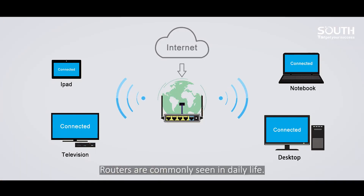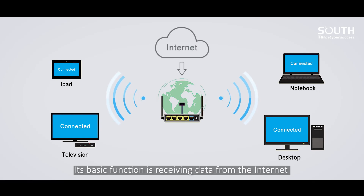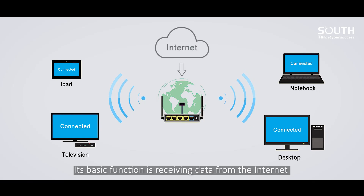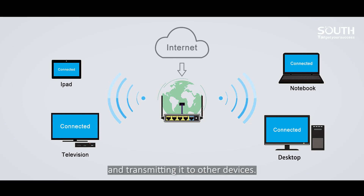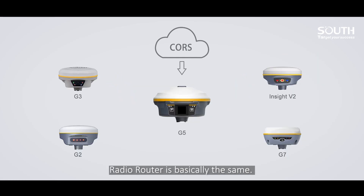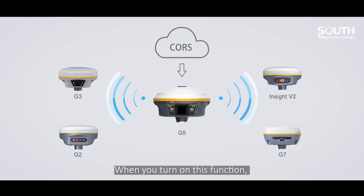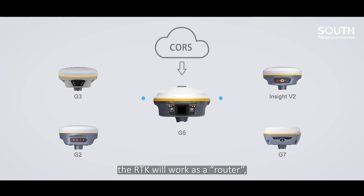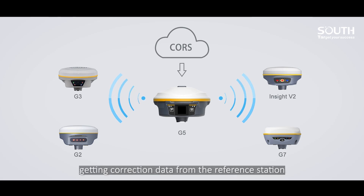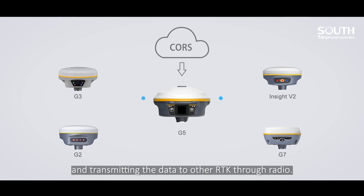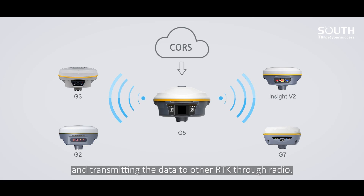Routers are commonly seen in daily life. Their basic function is receiving data from the internet and transmitting it to other devices. Radio router is basically the same. When you turn on this function, the RTK will work as a router, getting correction data from the reference stations and transmitting the data to other RTKs through radio.